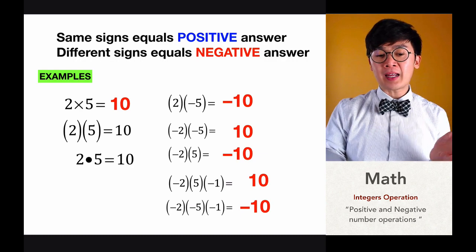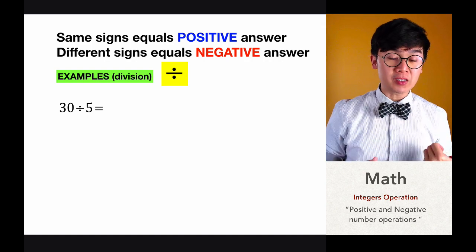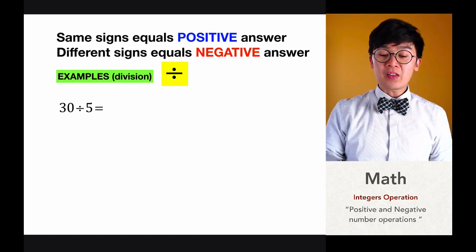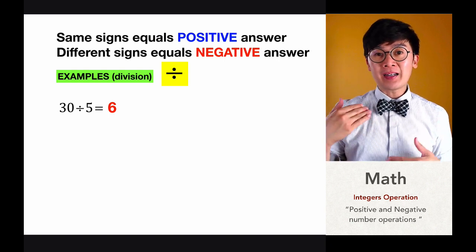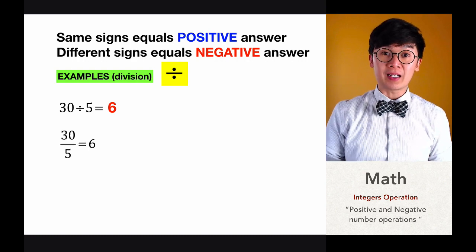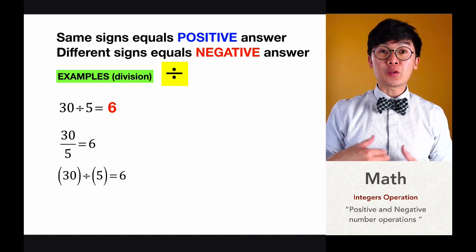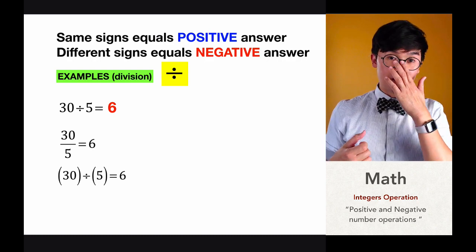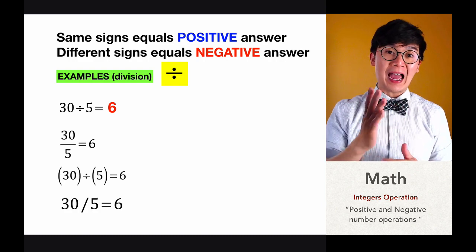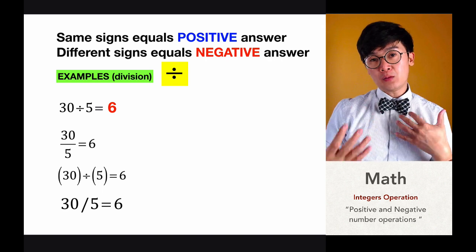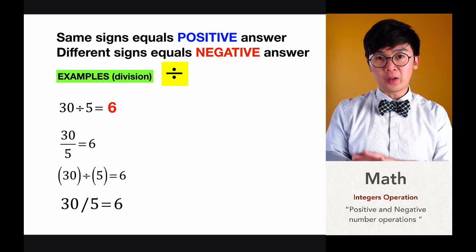The great thing about multiplying and dividing integers is that they share the same rule: same sign is positive and different sign is negative. So 30 divided by 5, knowing the multiplication table, equals 6. Just like multiplication, division can be presented in several ways: sometimes in fraction form — 30 over 5 — sometimes with parentheses, or using a slash. Different notations, but the same way to simplify the equation.